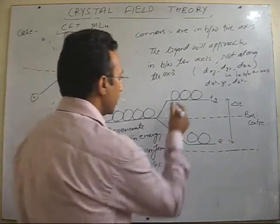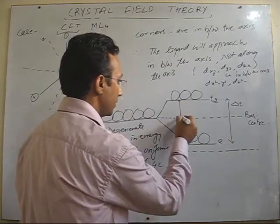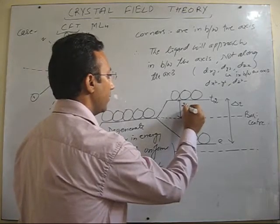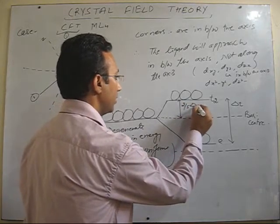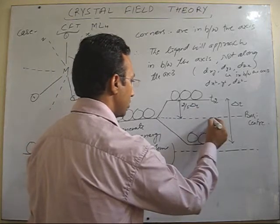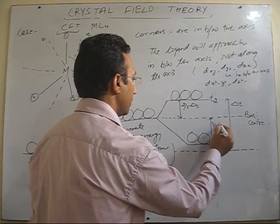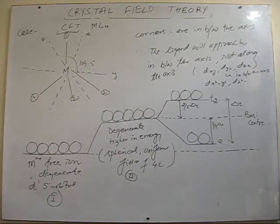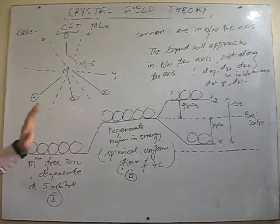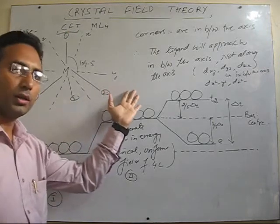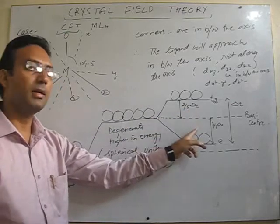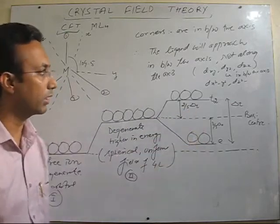In this case, the difference from the Bary center is 2/5 delta T for one set and 3/5 delta T for the other. This diagram is to be drawn with much care. Sometimes the exam question is asked for octahedral field and the student represents tetrahedral field splitting, so care should be taken.